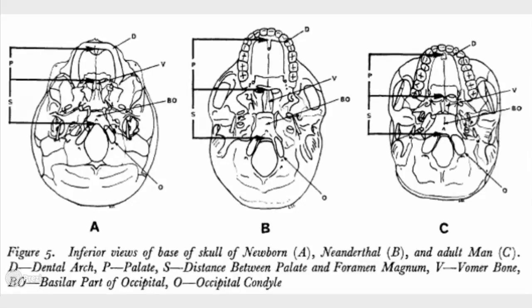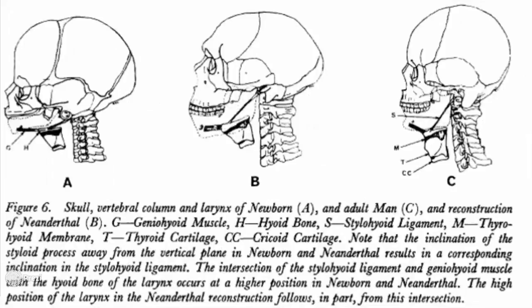We're going to talk about the dental arch here. The dental arch is U-shaped in most of these — it's roughly U-shaped throughout. You can see the palate here as well; this is the underside of the skull. Picture two shows the pterygoid process of the sphenoid bone, which is relatively short in the newborn. The posterior border of the pterygoid process of the lateral lamina is inclined away from the vertical plane in both the newborn and Neanderthal, but not so much in adult man. The styloid process is also inclined away from the vertical plane in both.